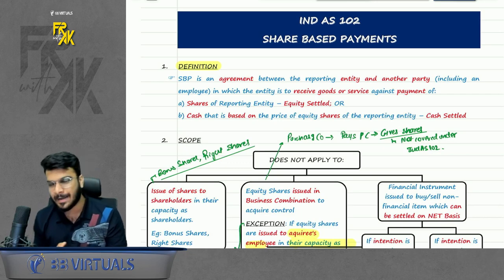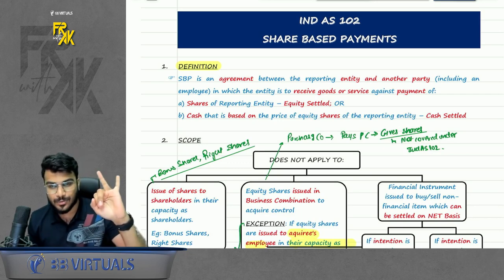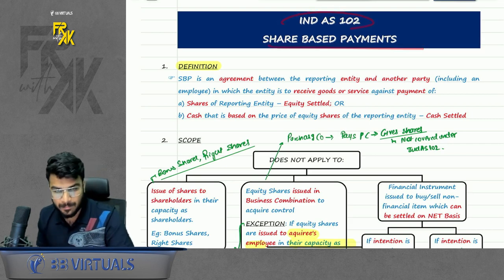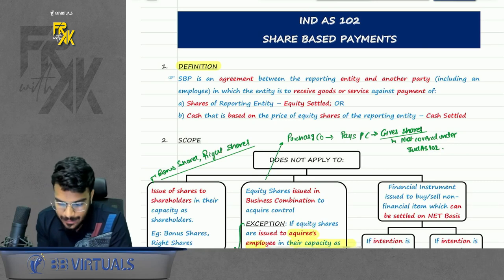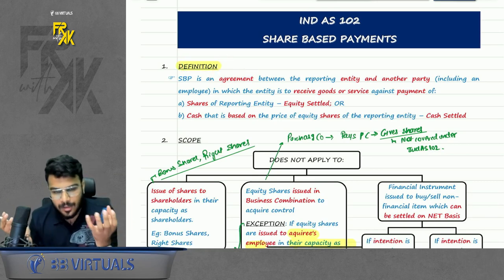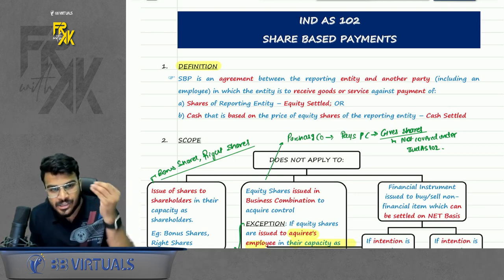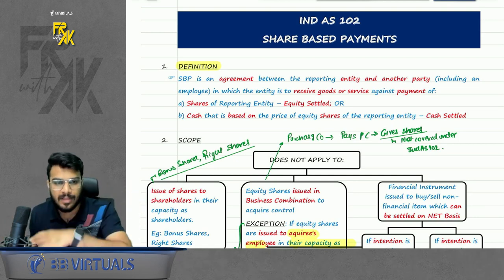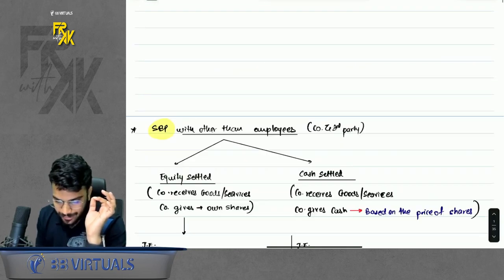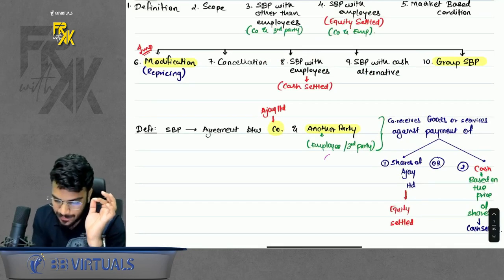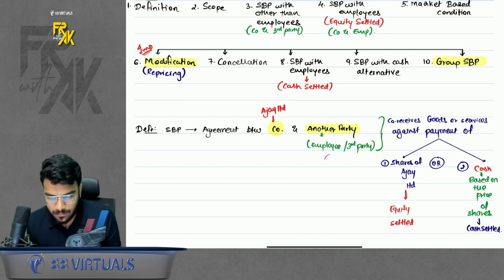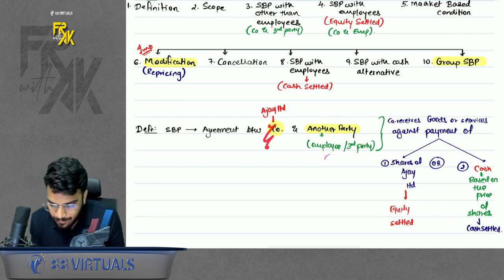Index 102 is named Share Based Payment. It is an agreement between a company and another party, where the company receives goods and services and in exchange gives shares. That other party can be an employee or a third party.